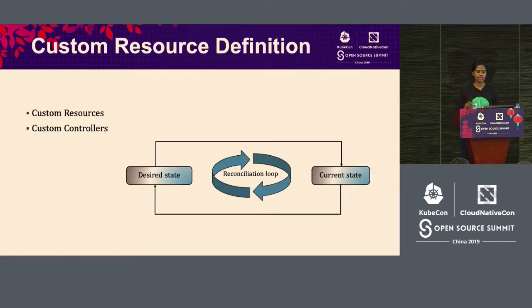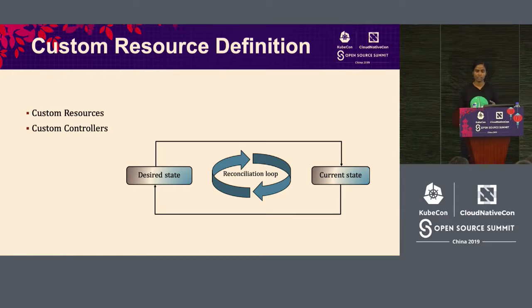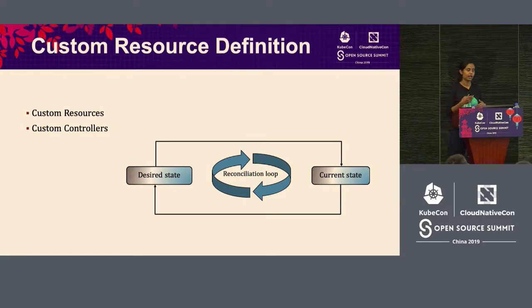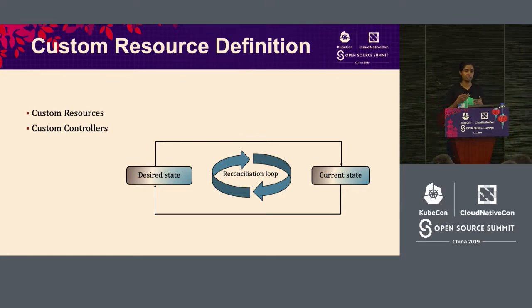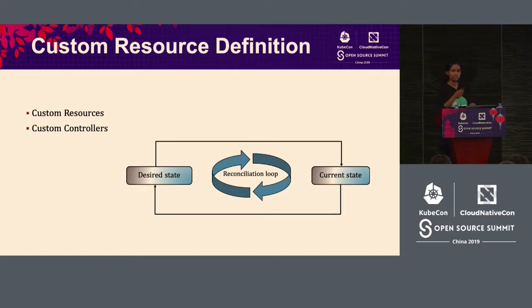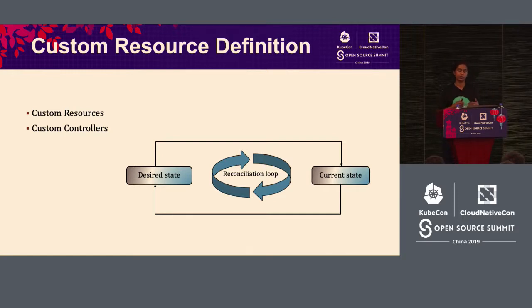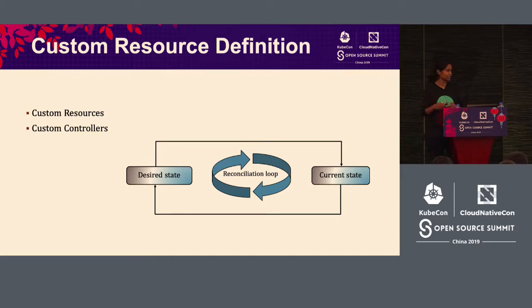What does this mean in the CICD world? The desired state of the object is: I want my CI job to be completed. The current state represents the list of actions I want to perform. The reconciliation loop, or the controllers, continuously try to reconcile your given set of actions to ensure it is completed. Whether it's successful or failed depends on what the actions themselves are, but the goal is to reach the completion stage.